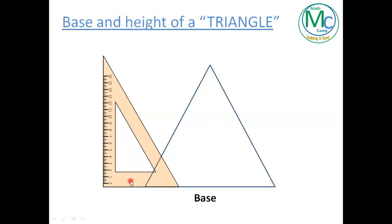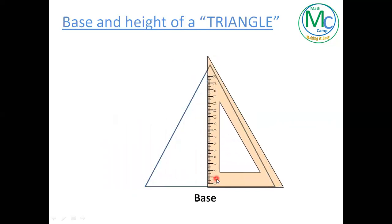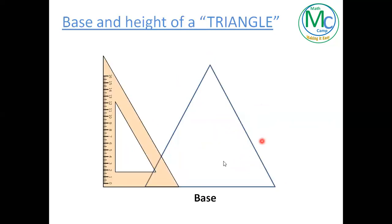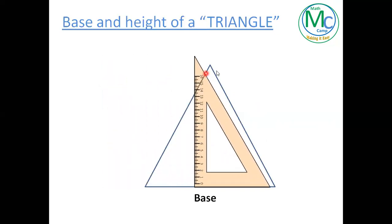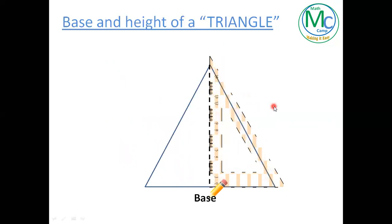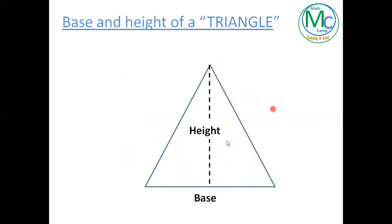So I'm sliding this one and I will stop here — because this height side has touched this vertex. I'll start sliding again and stop when it touches this vertex. After that, I will just draw this line. So this is going to be the height. The height for this base is this.